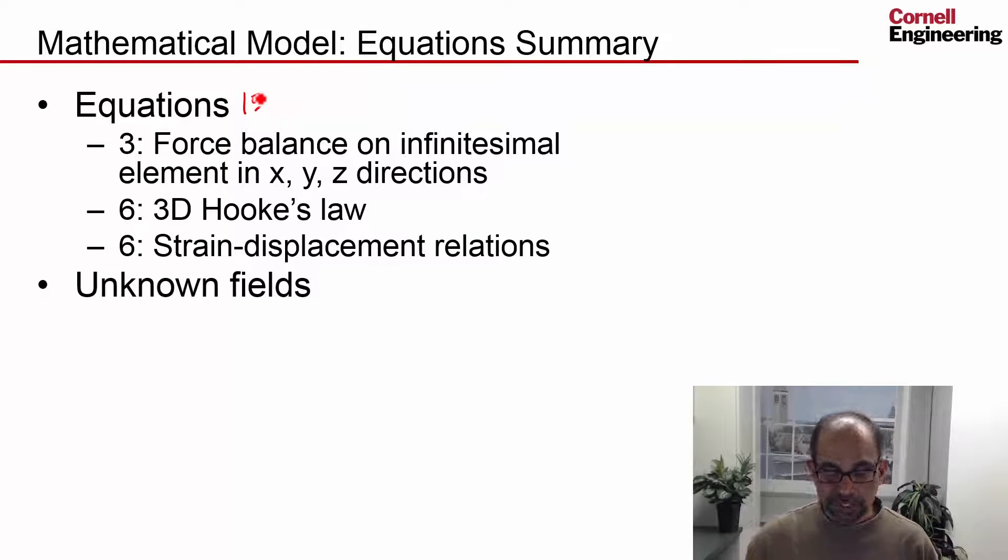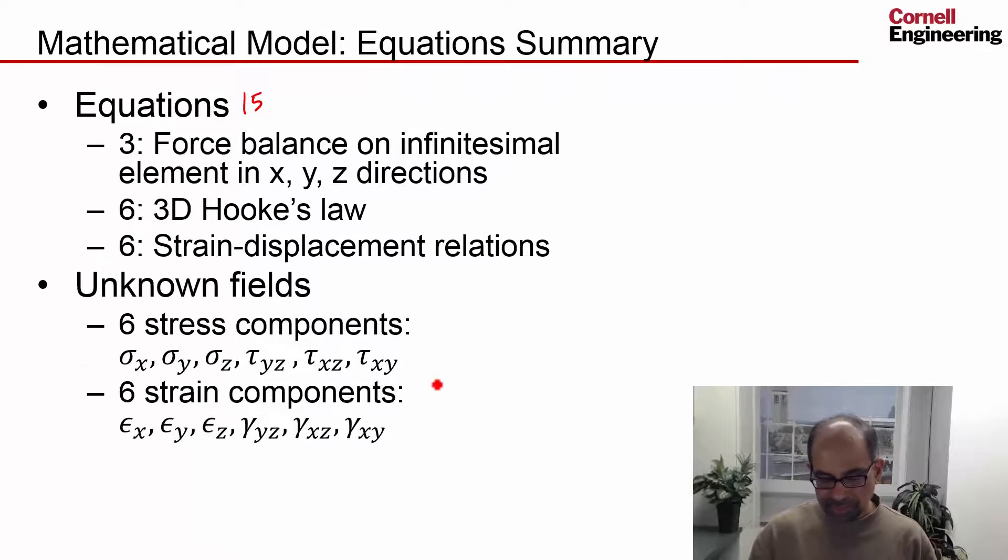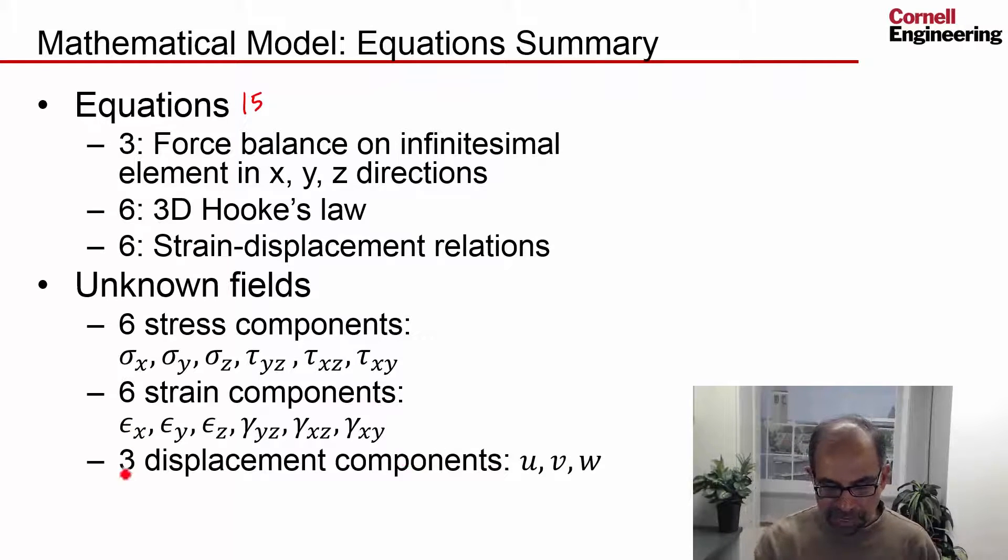What about unknown fields? We have six stress components, three normal, three shear. We have six strain components, three normal and three shear. And we have three displacement components, U, V, and W. So that's 12 plus 3, 15.